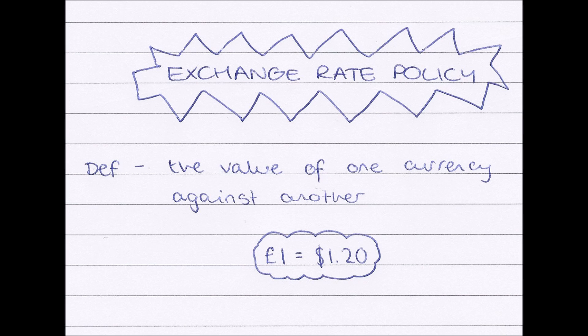We have an example of an exchange rate here: one pound is equivalent to the same value as one dollar twenty. This is how much the value of the pound is against the value of the dollar — how much the value of one currency is against the value of another.